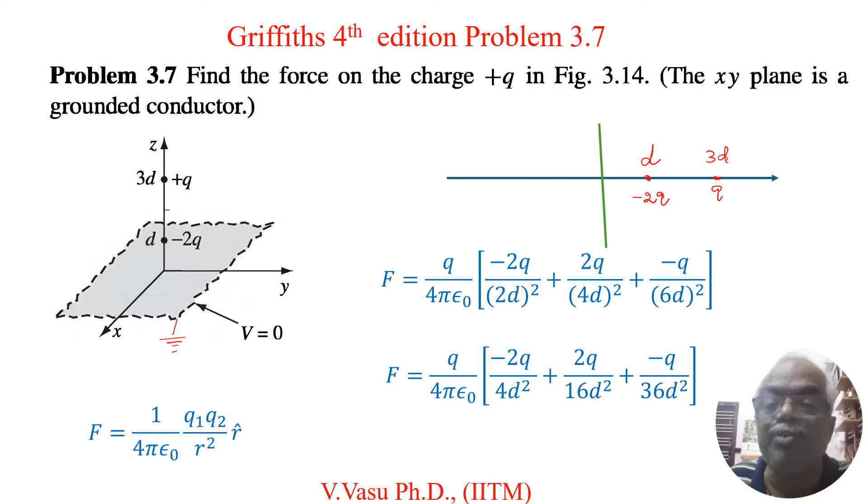That means we have to keep one image charge here at distance d. The charge is plus 2Q. Since it is a symmetry equal distance, the potential created by this minus 2Q is exactly cancelled by this plus 2Q. So naturally the grounded conductor potential is 0.